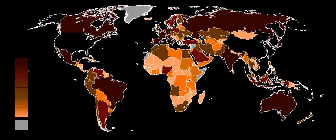Within each country, GDP is normally measured by a national government statistical agency, as private sector organizations normally do not have access to the information required. The raw GDP figure is called the nominal, historical, or current GDP. When one compares GDP figures from one year to another, it is desirable to compensate for changes in the value of money — for the effects of inflation or deflation. To make it more meaningful for year-to-year comparisons, it may be multiplied by the ratio between the value of money in the year the GDP was measured and the value of money in a base year.